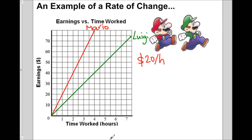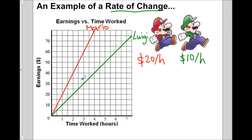Now if we take a look at Luigi's graph, when he doesn't work, he doesn't earn any money. But after an hour of working, he earns $10. After two hours, it goes up to $20. After three hours, it goes up to $30. So his rate is $10 per hour — maybe Luigi's just not as good a plumber as his brother. That's an example of what we call a rate of change. Mario's earnings are changing at a rate of $20 per hour, and Luigi's earnings are changing at a rate of $10 per hour.